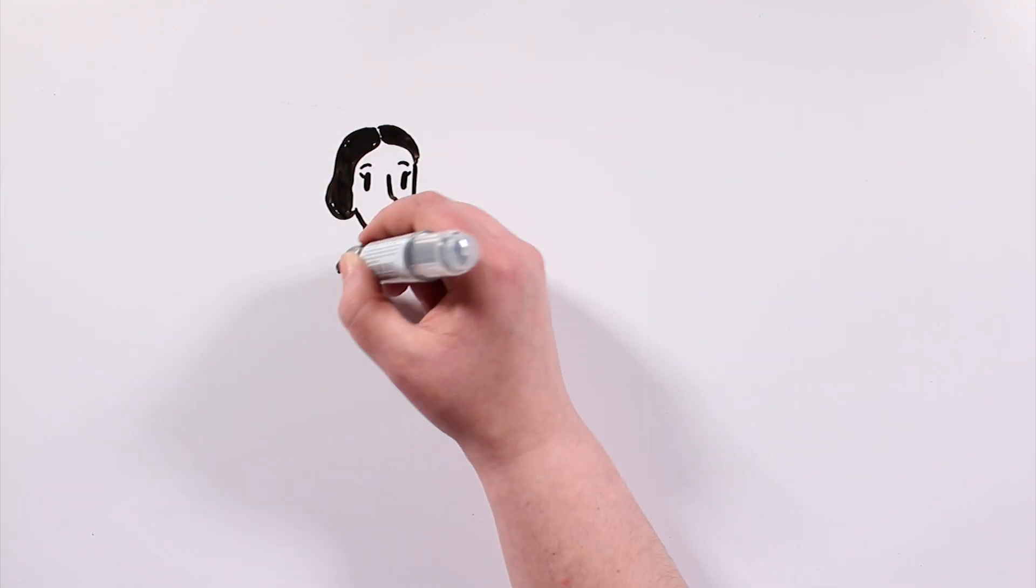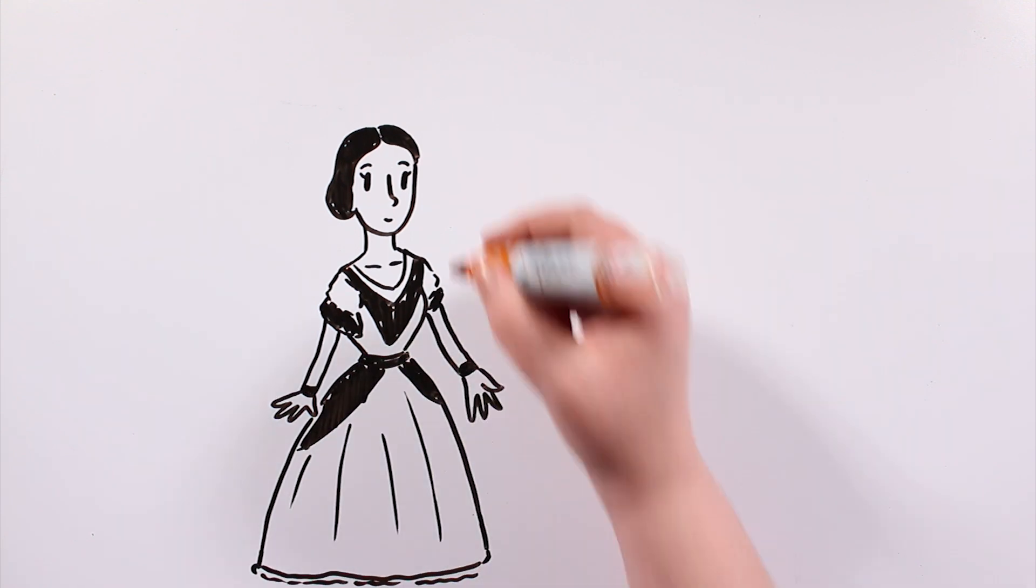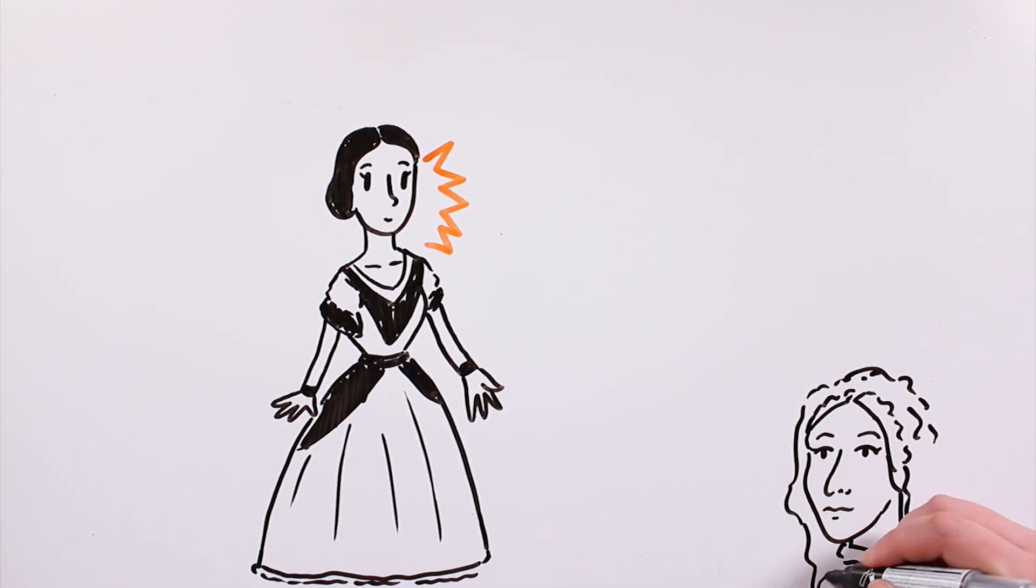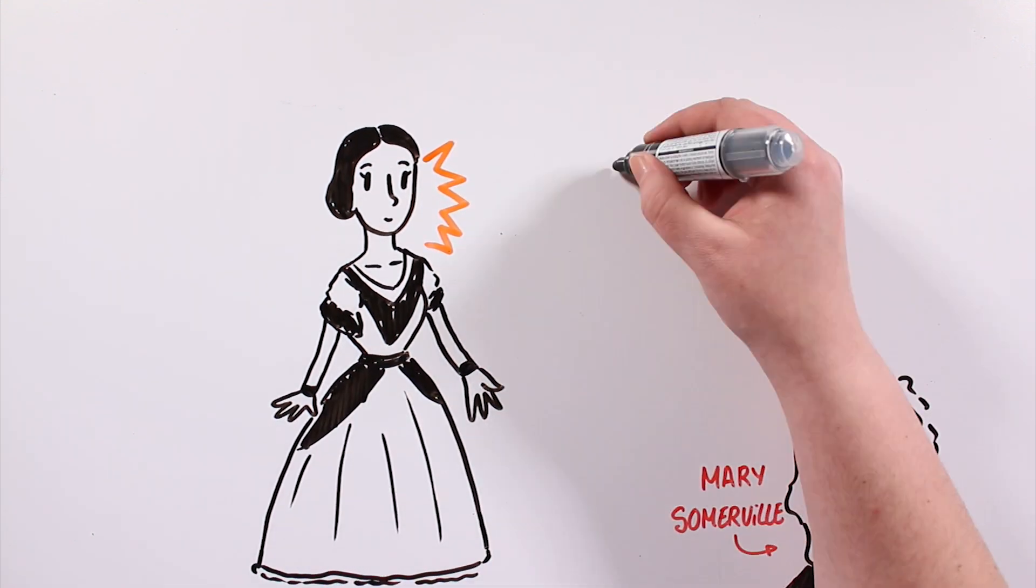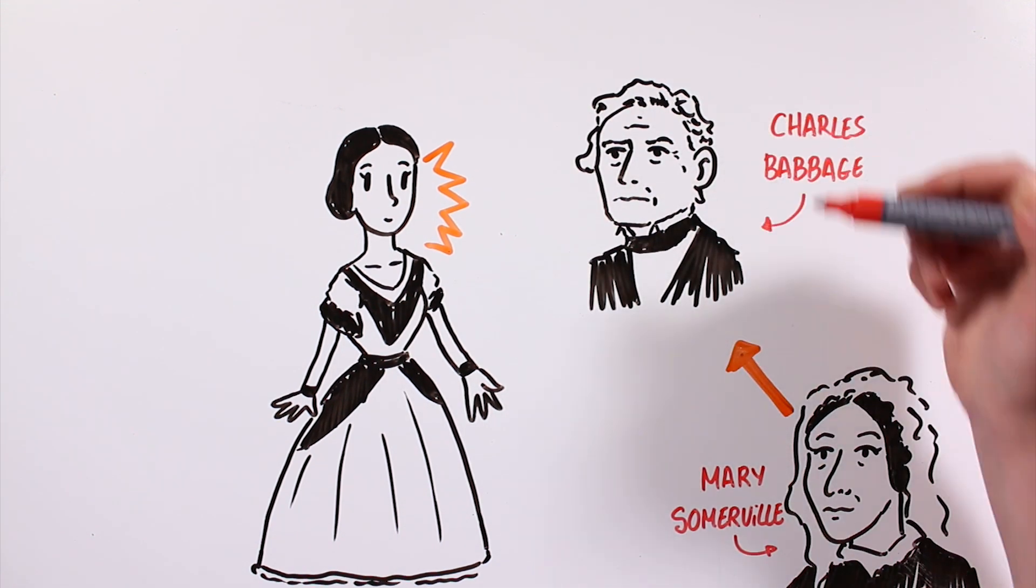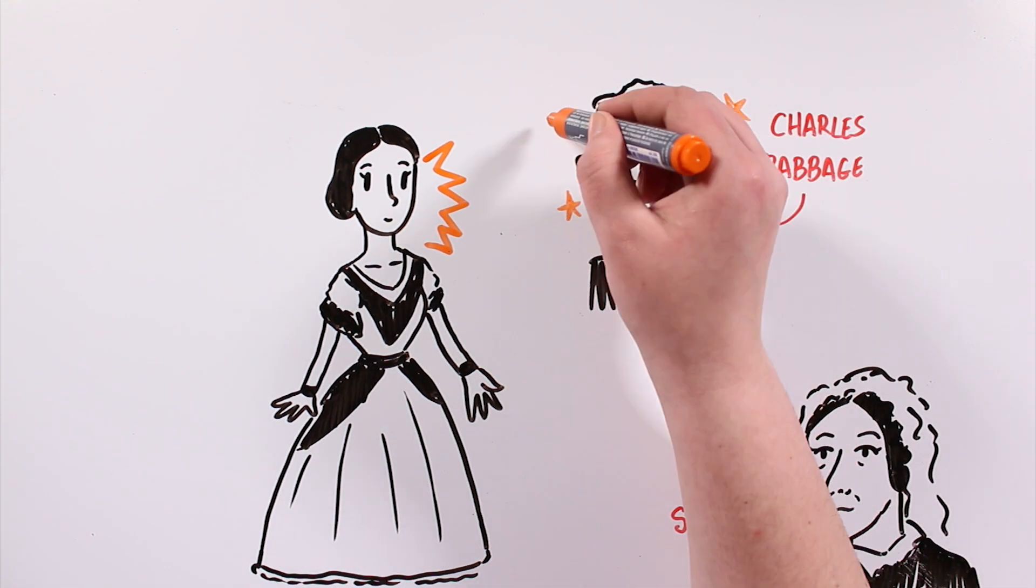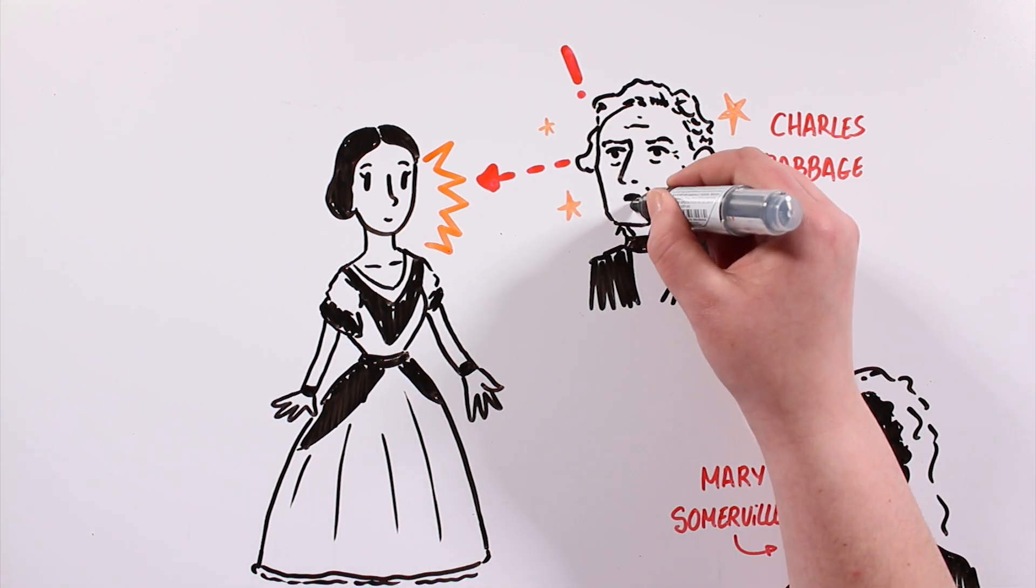From the beginning, Lovelace showed a talent for numbers and language. At 17, one of her tutors, Mary Somerville, introduced her to Charles Babbage, a well-known mathematician and inventor, who was impressed by the young woman's intelligence and knowledge.